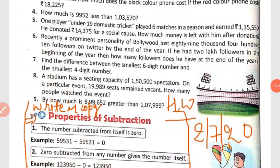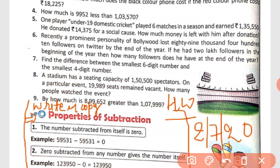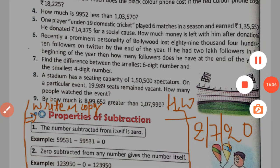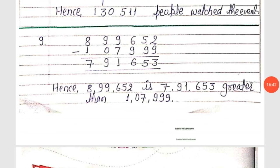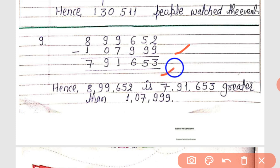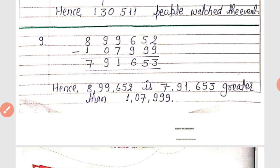Last question: by how much is 8,99,652 greater than 1,70,999? We subtract 1,70,999 from 8,99,652. After subtracting, we get a difference of 7,91,653. Hence, 8,99,652 is 7,91,653 greater than 1,70,999. Thank you everyone, I hope you liked it.